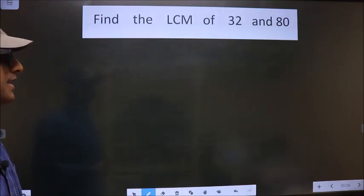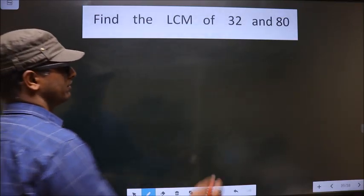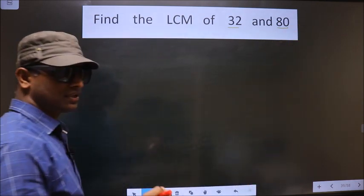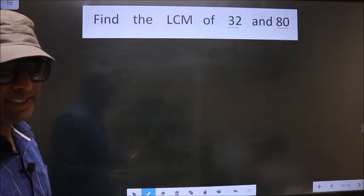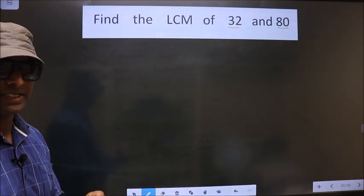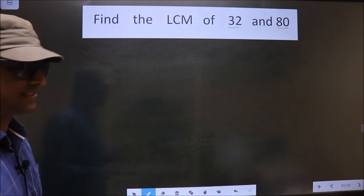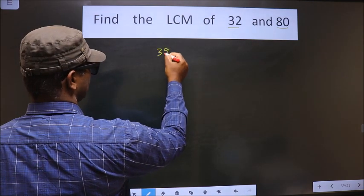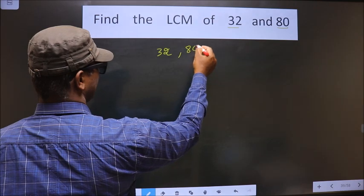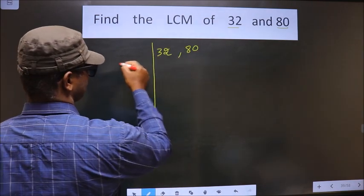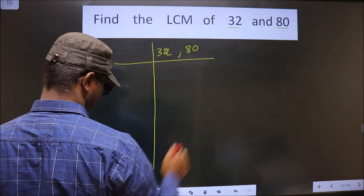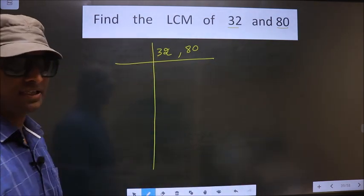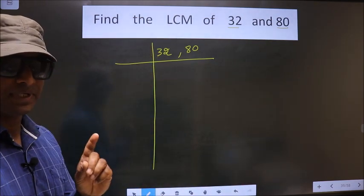Find the LCM of 32 and 80. To find the LCM, first we should frame it in this way — writing 32 and 80. This is your step 1.